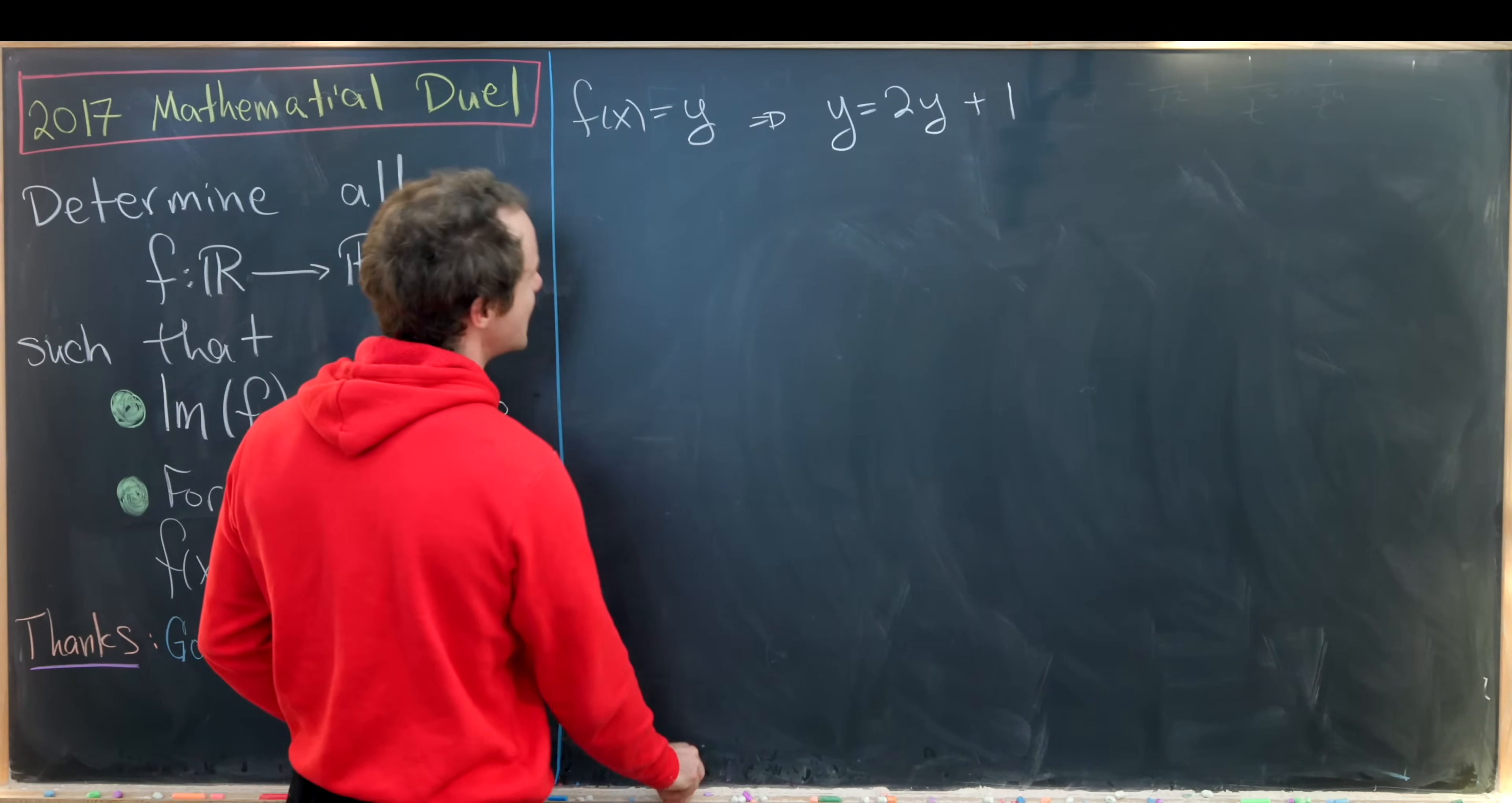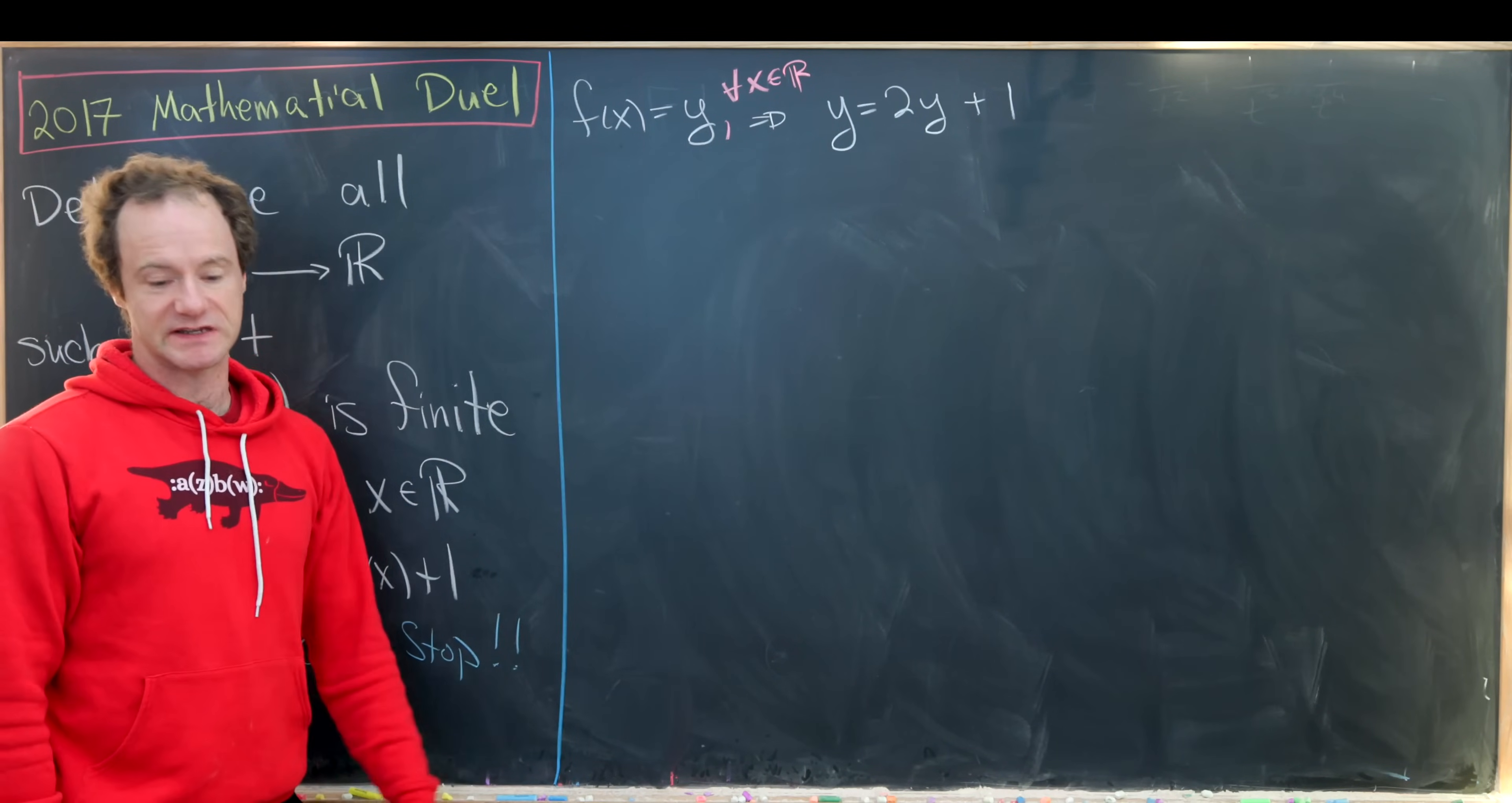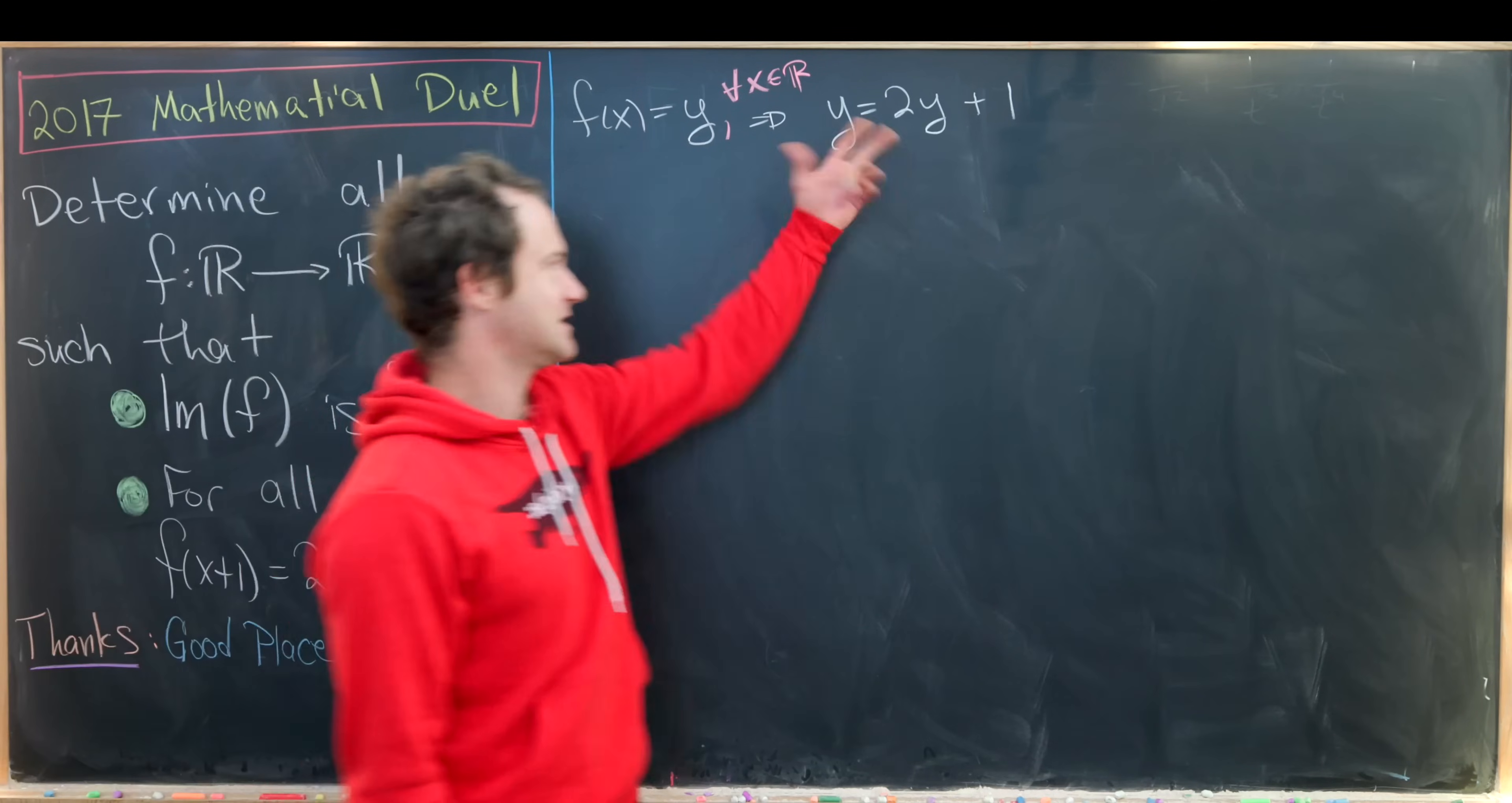So let's maybe doctor this up a little bit so we have all of the details. So we're first assuming that this only takes on one value just to see if we can get an example function out of the way, and then we'll show that that function is indeed the only one. Okay, but this is a really